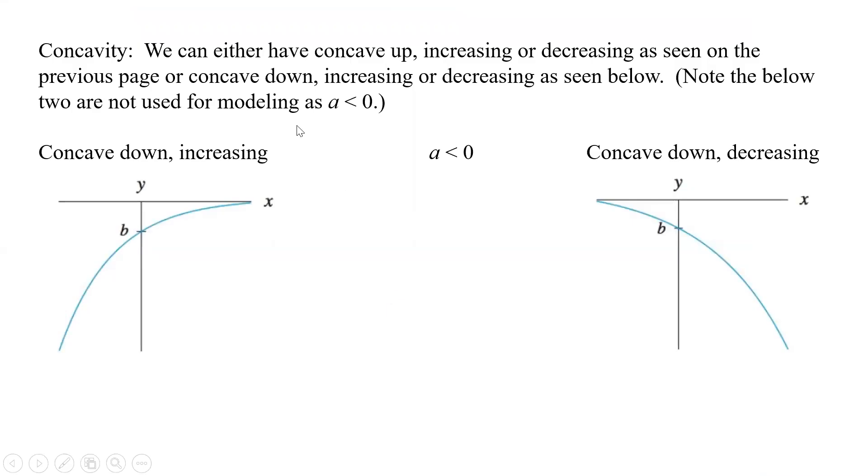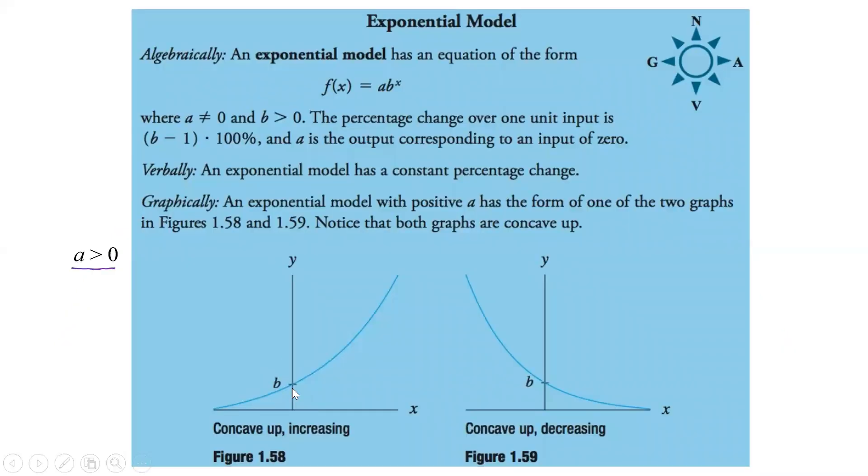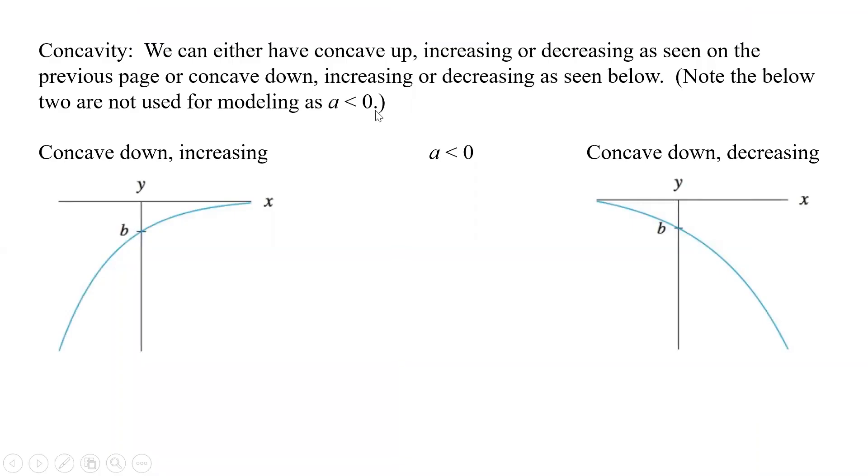Now, concavity, well, you can either have concave up, which is increasing or decreasing, as we just saw here, these are concave up. Or we can have concave down, and we can have increasing or decreasing again. And what happens is, these two are not used for modeling, because we're having a less than 0. And so we usually don't have that for this class. Now, we might have some models that actually have it, but usually we don't model that ourselves.